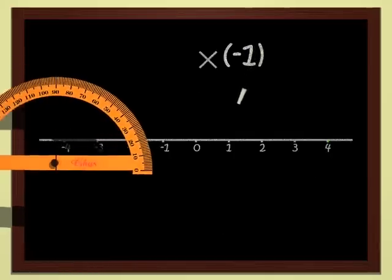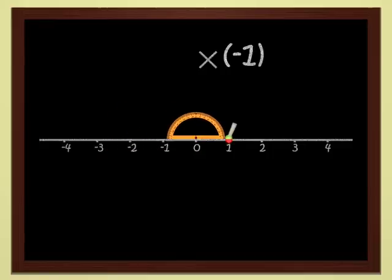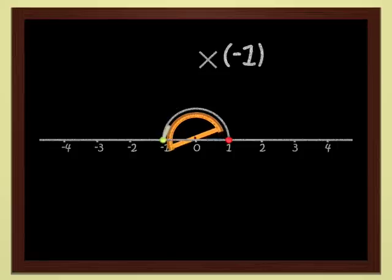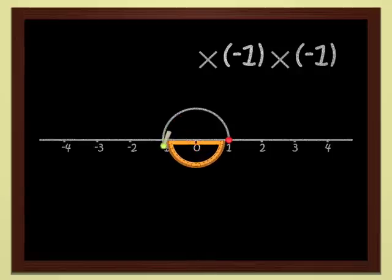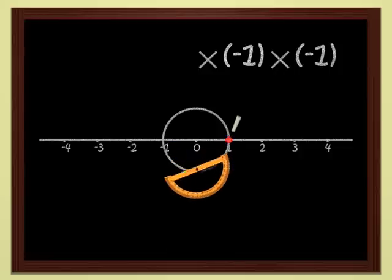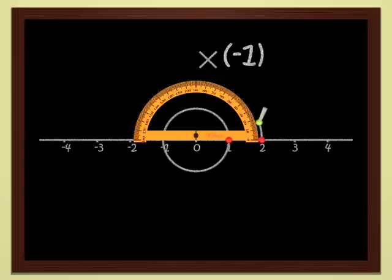Multiplying by minus one is very easy. Each point is sent to the symmetrical point with respect to the origin. In other words, we do a half turn, a rotation by 180 degrees, if you like. When we multiply a number by itself, the result is always positive. For instance, if we multiply by minus one, we make half a turn. So that if we do it one more time, we come back to the initial point. This is why minus one times minus one is equal to plus one. Simple enough.